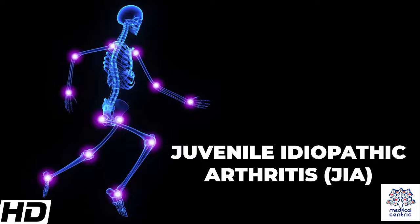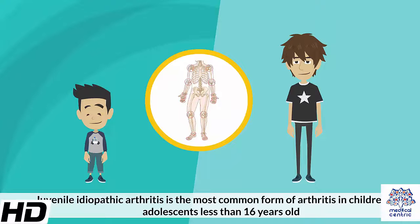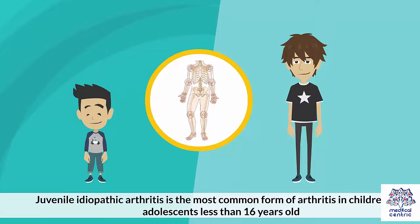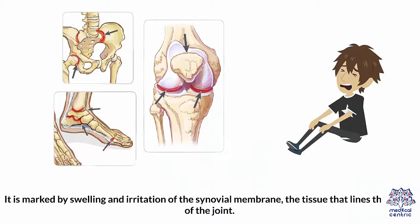Today's topic is Juvenile Idiopathic Arthritis, or JIA. Juvenile idiopathic arthritis is the most common form of arthritis in children and adolescents less than 16 years old. It is marked by swelling and irritation of the synovial membrane – the tissue that lines the inside of the joint.